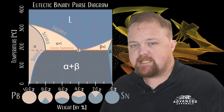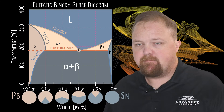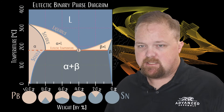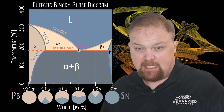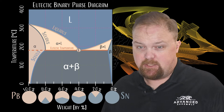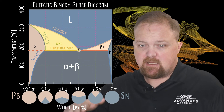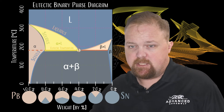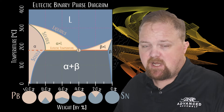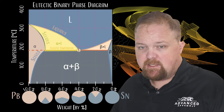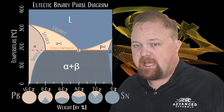As a solid phase alloy is heated, it begins to melt at a solidus temperature and is fully melted at the liquidus temperature. In between the solidus and liquidus temperature, the mixture is a combination of solids and liquids — a paste.